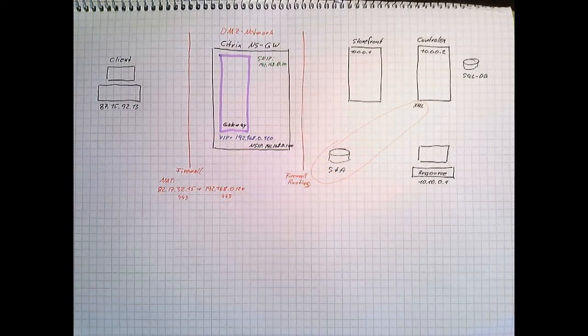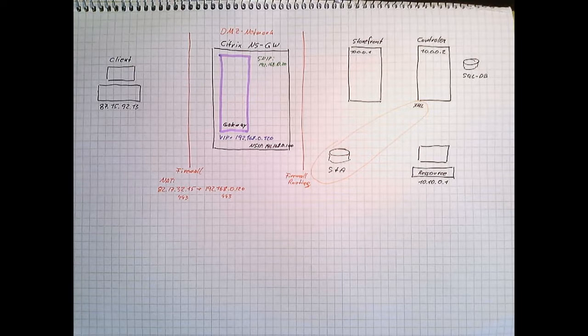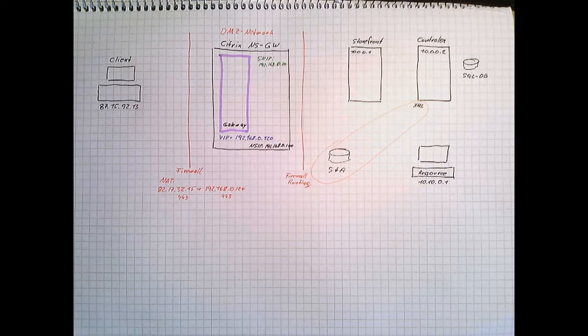So this is our environment. We got a client somewhere on the internet with an IP address of 87.15.92.13. We got a DMZ network with NetScaler in it. There's an outside firewall, a NAT firewall netting 82.17.32.15 port 443 to 192.168.0.120 port 443. This IP address is a virtual IP address of the NetScaler gateway. This NetScaler of course got a NetScaler IP address 192.168.0.100 and the subnet IP address 192.168.0.110.